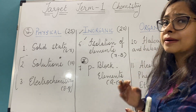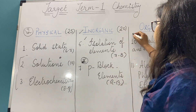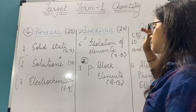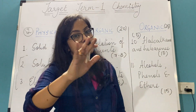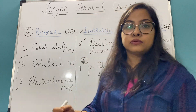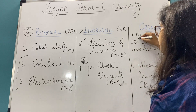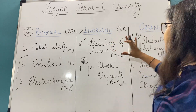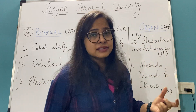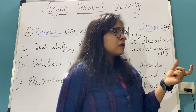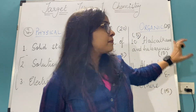Haloalkanes and Haloarenes is comparatively simpler and smaller than Alcohols. This chapter will take about 5 days — I am taking extra days because you have other subjects too. Then coming to Alcohols, Phenols and Ethers — it will require around 7 days, not more than that. So in total, 12 days will cover the entire Organic syllabus.